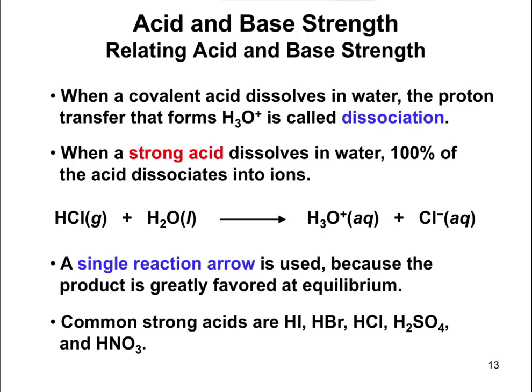Whenever you have a strong acid like this, we use a single reaction arrow because there's really no going backwards. Equilibrium means you have forwards and backwards. With a strong acid, there's really no backwards reaction that happens.